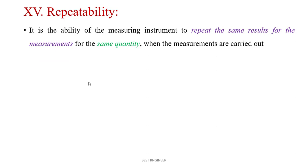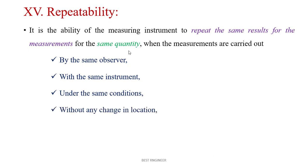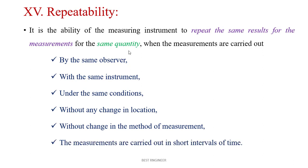Repeatability is the ability of a measuring instrument to repeat the same results for the same measurement of the same quantity when measurements are carried out by the same observer, with the same instrument, under the same conditions, without any change in location, without change in measurement method, and in short intervals of time. It may be expressed in terms of dispersion of results.